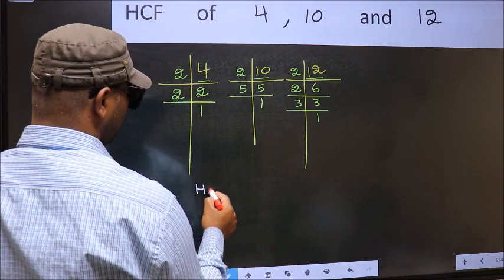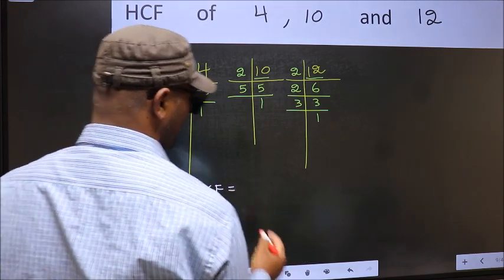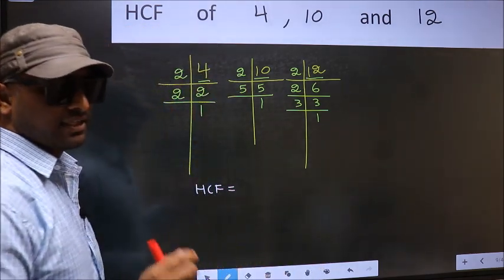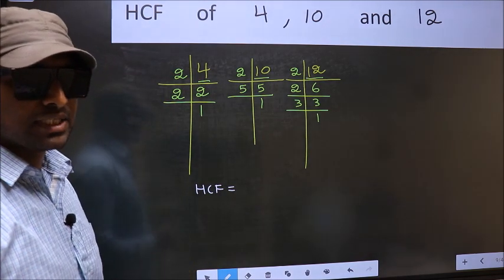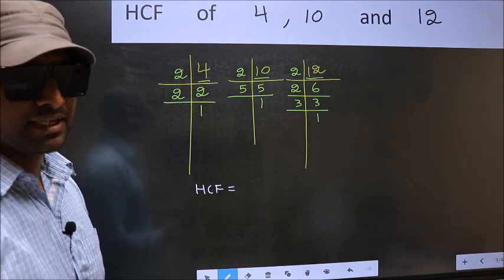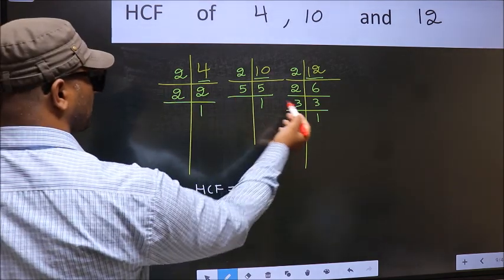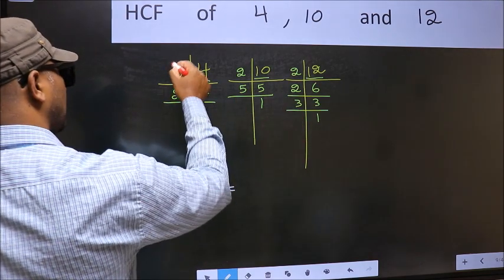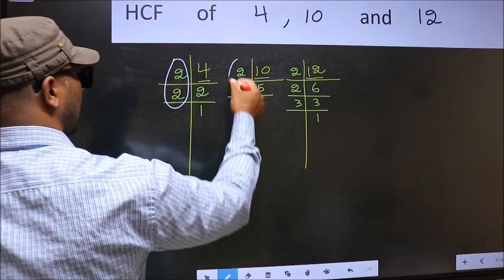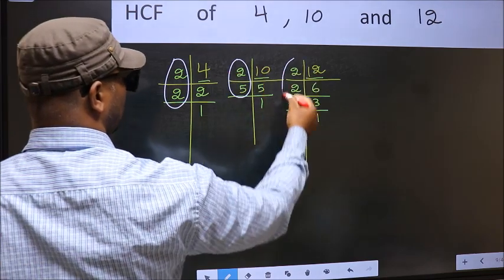Therefore, our HCF is, HCF is the product of the numbers which should be present in these 3 places. That is here and here and also here.